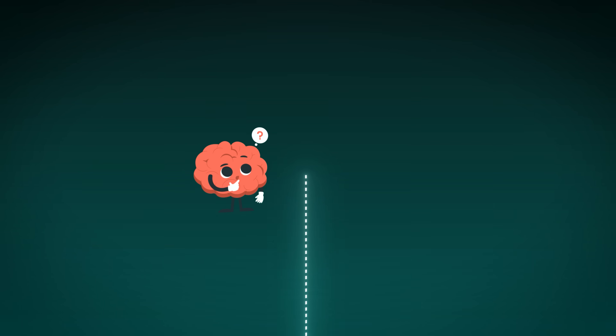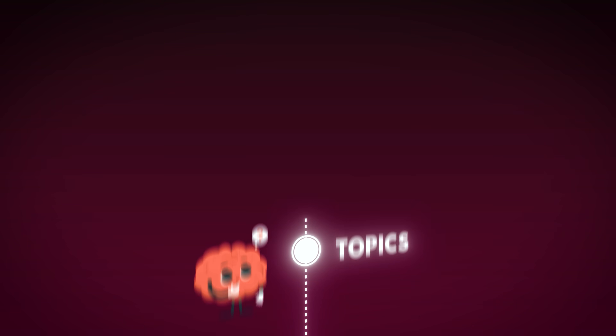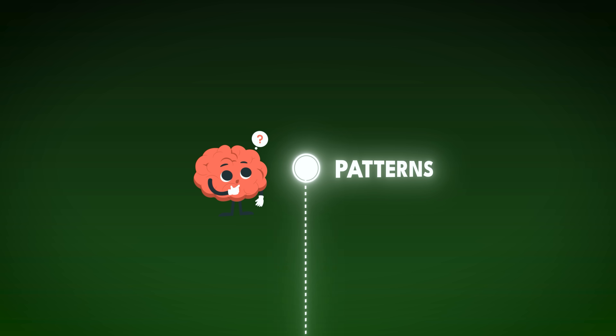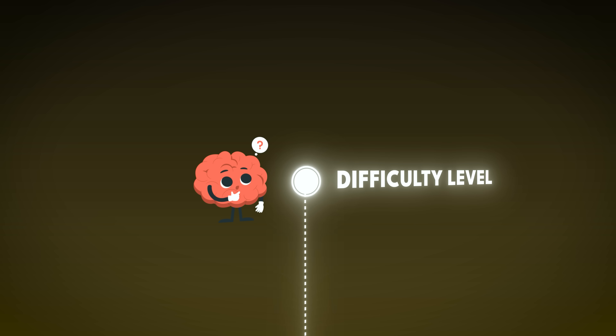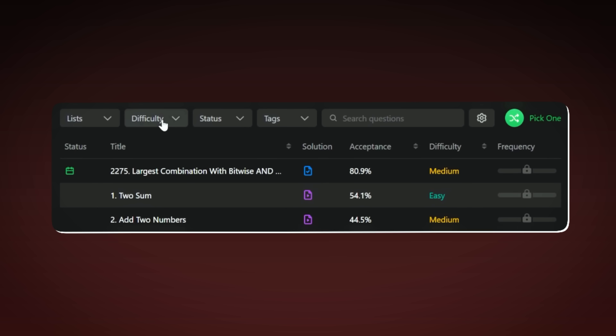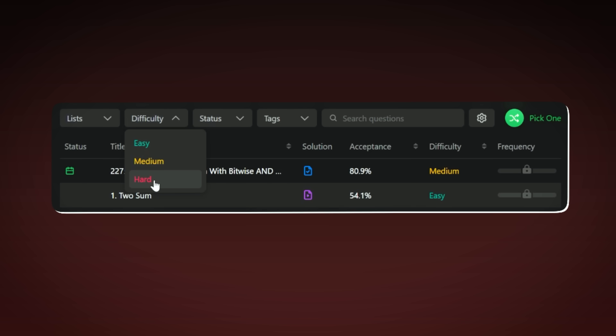The questions are divided into topics. After the patterns, within every topic there are multiple patterns. And in the patterns, they are arranged according to the difficulty level — not the difficulty level given on LeetCode, because that is a different difficulty level. The difficulty level which a student faces while solving those questions.